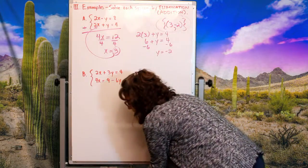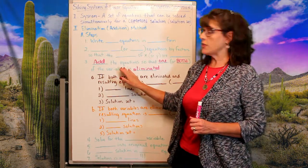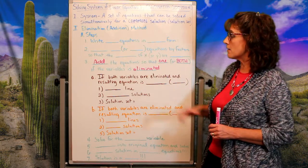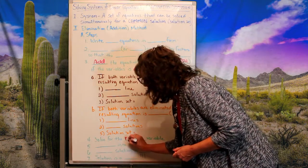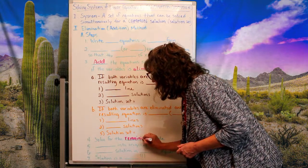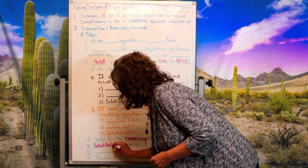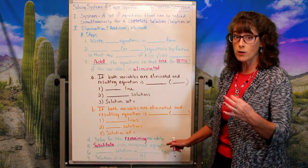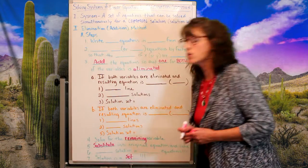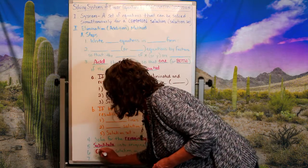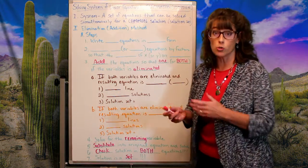Let's go back to the formal steps. The method of elimination starts differently from substitution because we add the equations to eliminate a set of variables. Once eliminated, we solve for the remaining variable, then substitute that value into one of the original equations to solve for the final variable. That gives the point of intersection — but always check the solution in both equations.